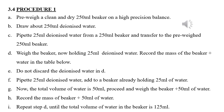Procedure 1: Pre-weigh a clean and dry 250 milliliter beaker on a high precision balance. Draw about 250 milliliters of deionized water. Pipette 25 milliliters of deionized water from the 250 milliliter beaker and transfer to the pre-weighed 250 milliliter beaker. Weigh the beaker now holding 25 milliliters of deionized water and record the mass of the beaker and water in the table below.